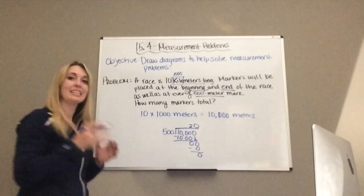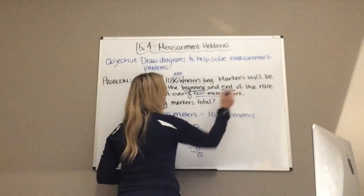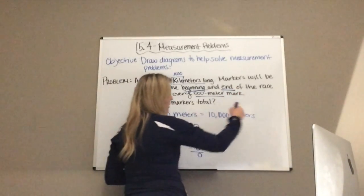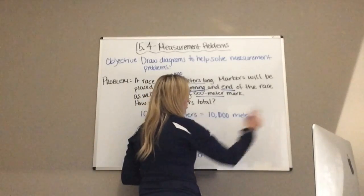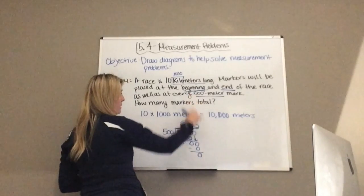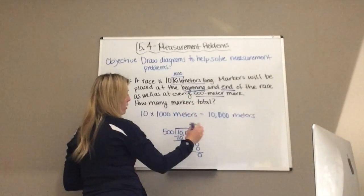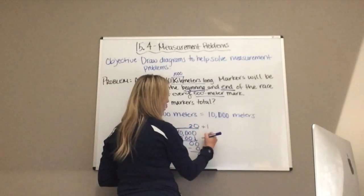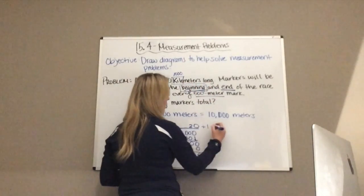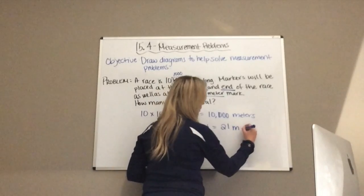However, I am not done. I still have to think about my beginning and end mark. The end mark is already taken care of by my meters, because it is every 500 meters. However, my zero — my start — has not been accounted for. So I need to add one more for my beginning, because that is my zero marker. And that equals 21. There are 21 markers.